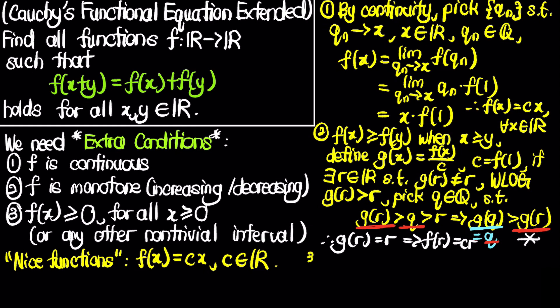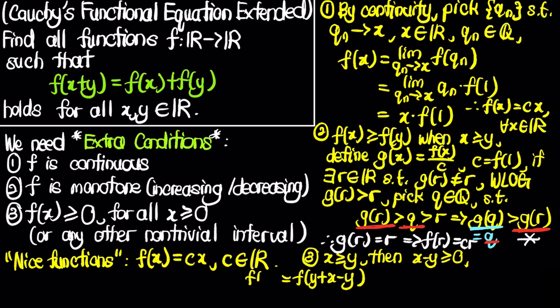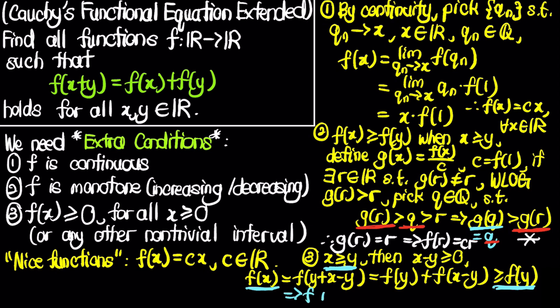For the third case, if f(x) ≥ 0 for all x ≥ 0: if x ≥ y, then x-y ≥ 0. We write f(x) = f(y + (x-y)) = f(y) + f(x-y) by additivity. Since x-y ≥ 0, f(x-y) ≥ 0, so f(x) ≥ f(y). This shows f is increasing whenever x ≥ y, meaning f is monotone increasing.